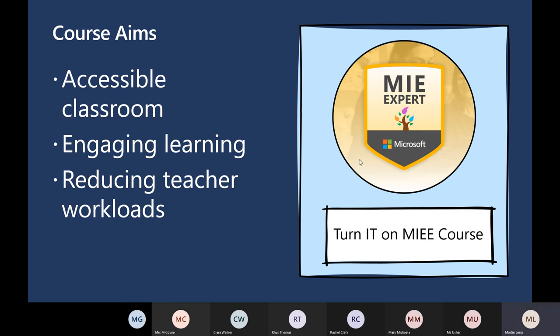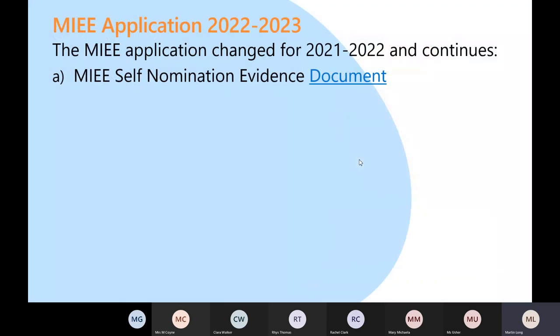The course itself is going to be in a few sections. The first thing you need to do is realise there's a document you can get hold of — I'll pop it in the chat during a lull in proceedings. It's a Word document and you can also get it from the MIEE self-nomination portal.